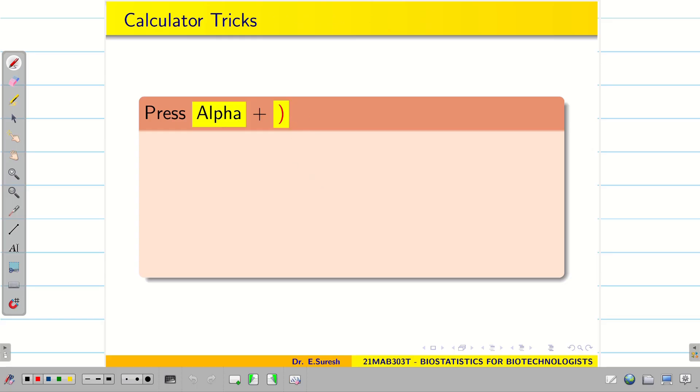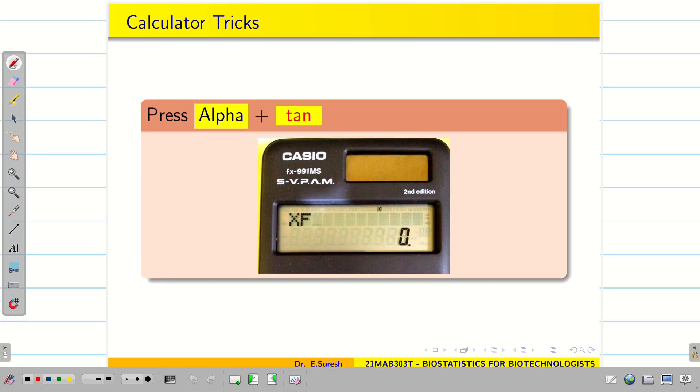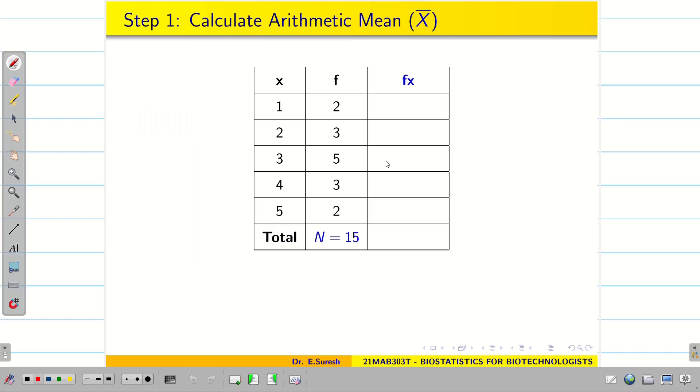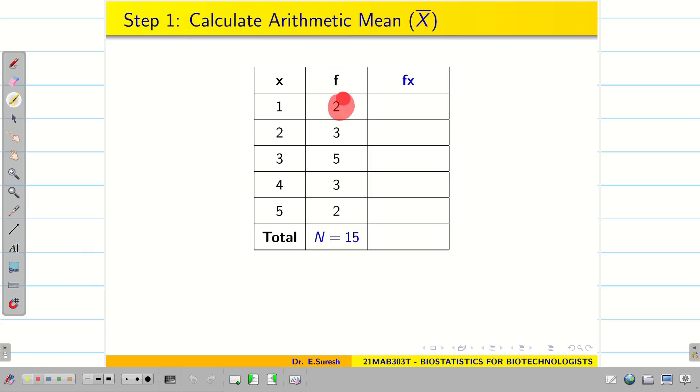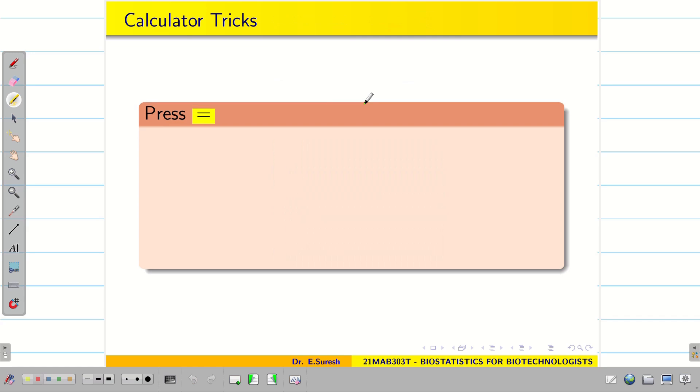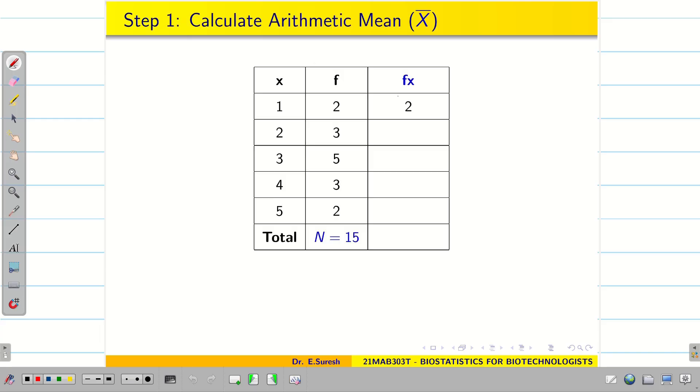When you press alpha plus closed bracket, you can get x. And then alpha plus tan, you get xf. Now press calc button. Then it will ask for x. Go to the table. This is my x value. Enter 1. Press equal to. Now it will ask for f value. Go to the table again. See the corresponding f value is 2. Press 2 and press equal to. And you can get the xf value is 2. If you enter fx, then it will ask f first. So I said many times, enter x, then go for f. Now we can enter the value here. Similarly, press calc again. Now enter x value 2, f value 3. Like this, we can fill the table.